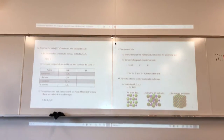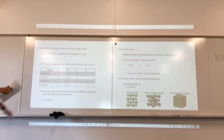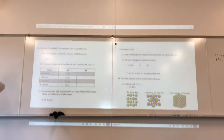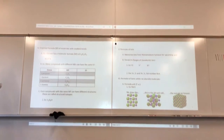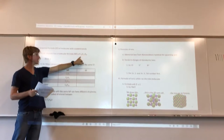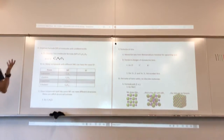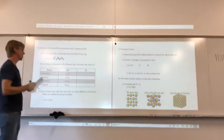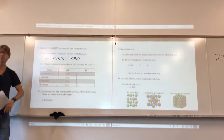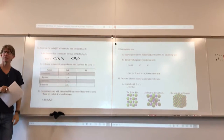Empirical formula — abbreviation EF — something you should have covered in Chem 300, but we're going to go over it because we want to do a lot of these problems. Glucose has a molecular formula of C6H12O6. Its empirical formula is the smallest whole number ratio, so it's going to be CH2O — the ones are not necessary to write.